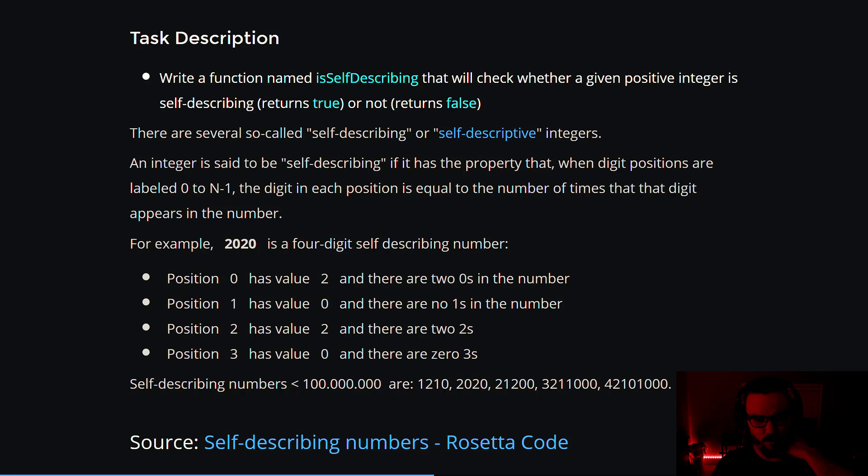Now the next one is position one, and it has a value of zero. So this tells us that there are zero ones in this number. Well, 2020 doesn't have any ones in it, so that also checks out.